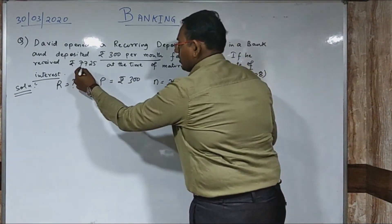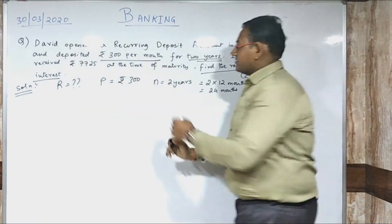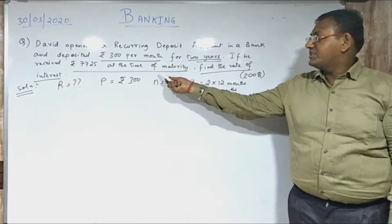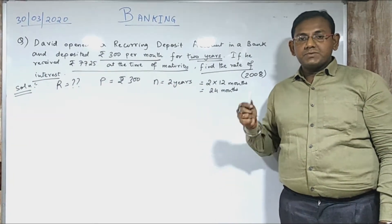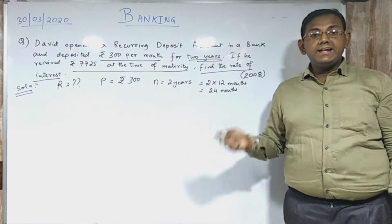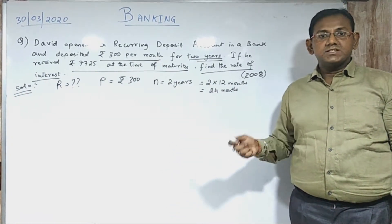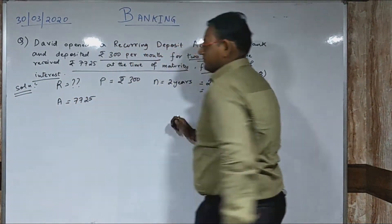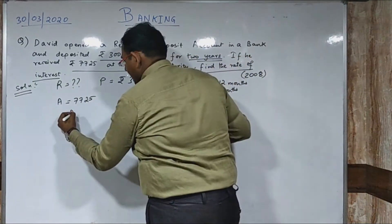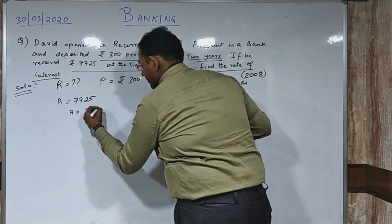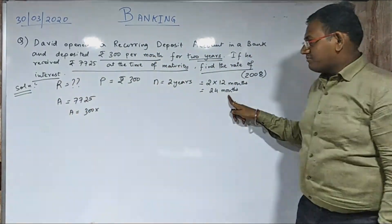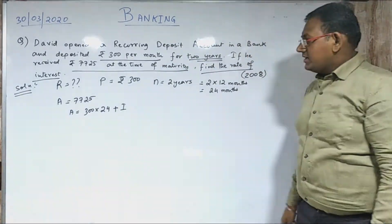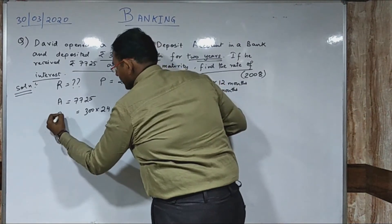The next thing given is the total amount received at the time of maturity. At maturity the person receives the amount, not just the interest — interest is calculated, but the person gets the total amount. So your amount is given as 7725. The formula is: amount equals total principal — that is principal multiplied by number of months — plus the interest.